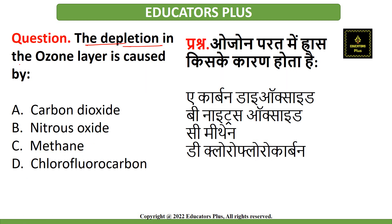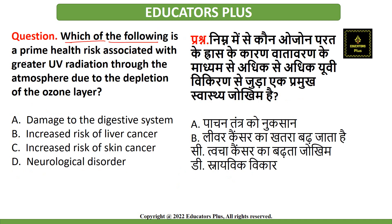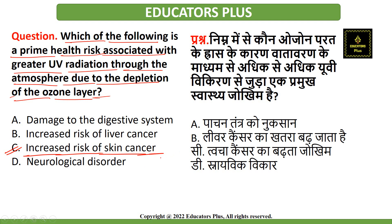The next question is: the depletion in the ozone layer is caused by which compound? The correct answer is option D — chlorofluorocarbons. The major reason for ozone layer depletion is CFCs, with sources including ACs and refrigerators. The following question asks: which is a prime health risk associated with greater UV radiations due to ozone layer depletion? The correct answer is option C — increased risk of skin cancer, as direct UV radiation can cause skin diseases and skin cancer.